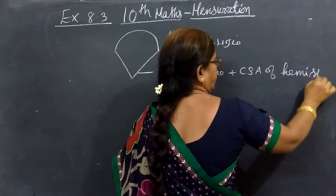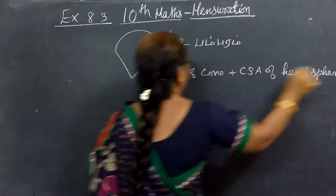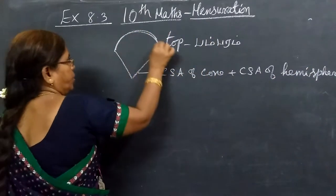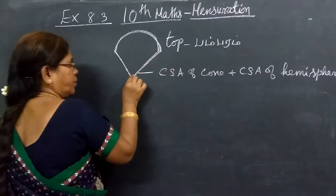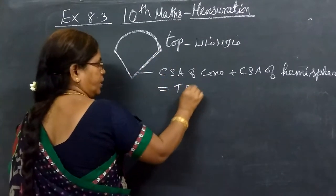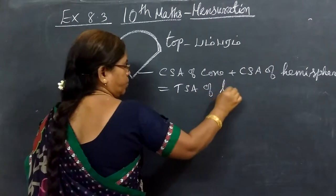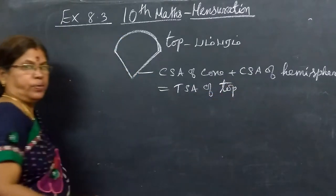The bottom is the hemisphere. After that, you are getting CSA of top. Bambaram is the total surface area.